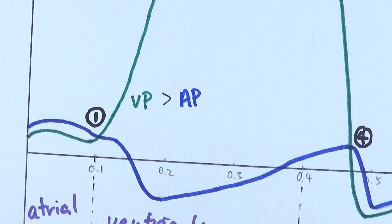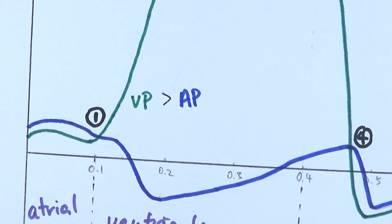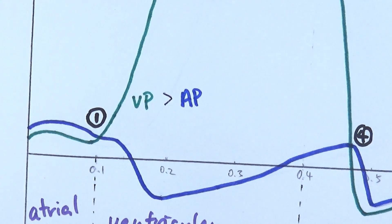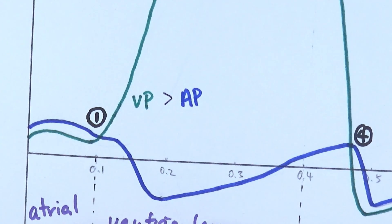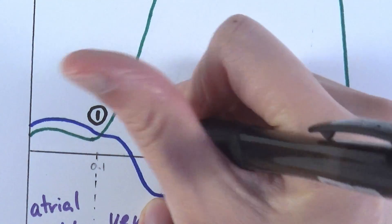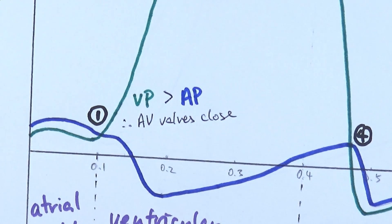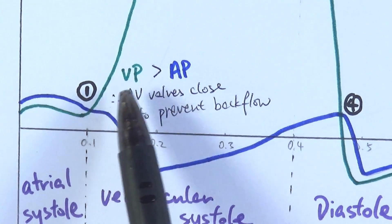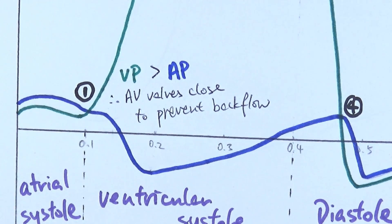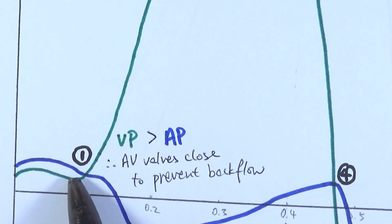With ventricular pressure much higher than atrial pressure, blood could theoretically flow back from the ventricles into the atria, since atrial pressure is so much lower. However, the atrioventricular valves — the bicuspid and tricuspid valves — prevent this. At this point, the atrioventricular valves close to prevent the backflow of blood, forcing all blood to go in the other direction — through the aorta.